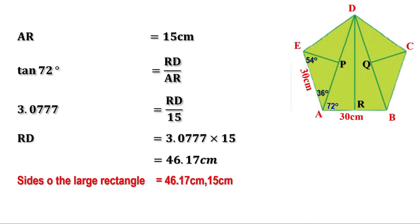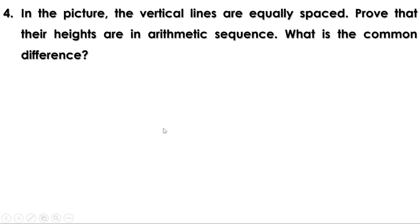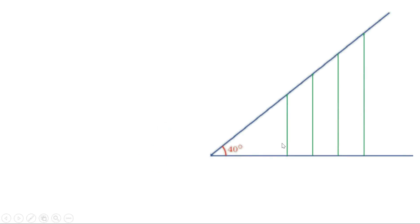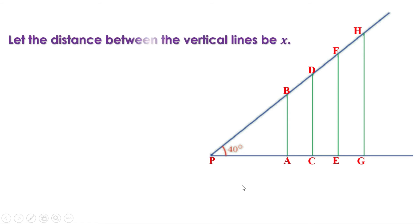Now let us do the remaining problems on page 117. Fourth problem: In the picture, the vertical lines are equally spaced. Prove that their heights are in arithmetic sequence. What is the common difference? Let us give a name for the vertical lines and this point. Let this be P. Let this vertical line be AB, this be CD, this be EF, and this be GH. Given that the vertical lines are equally spaced, the distance between them is equal. Let the distance between adjacent vertical lines be X.